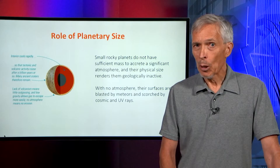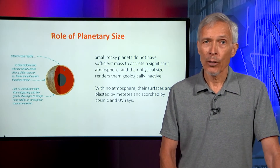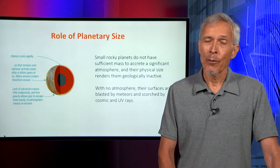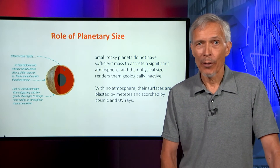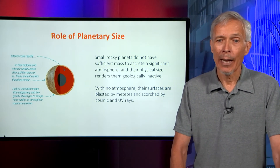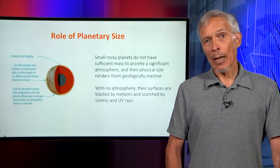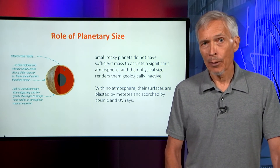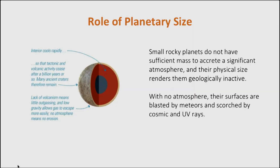Mars defines the boundary between something that is geologically active and not geologically active. We know that Mars has been geologically active in the past and has the largest volcano in the solar system, but is not very active at the moment. The Earth and Venus, very similar in size and both quite a lot larger than Mars, are both massive enough to have sustained active geology throughout their entire histories. A low mass planet with no atmosphere will be peppered with impacts from space, so its surface will show a cratering history of debris in the solar system, and we use this information to talk about the history of cratering and what happened to all the debris left over from planet formation.